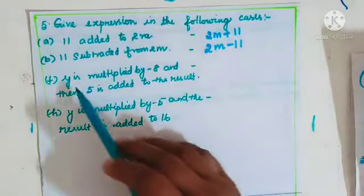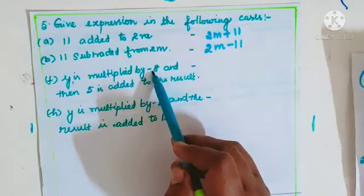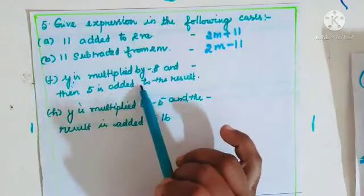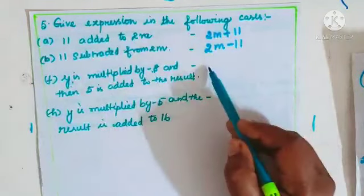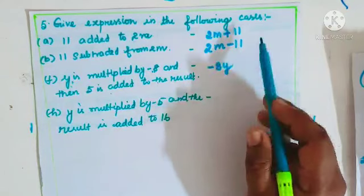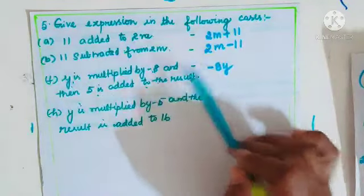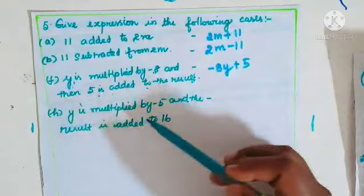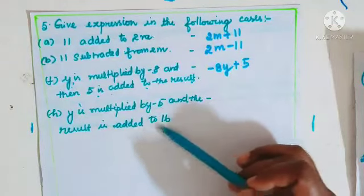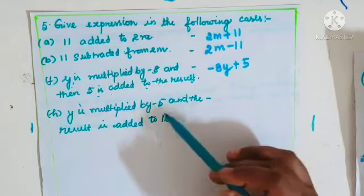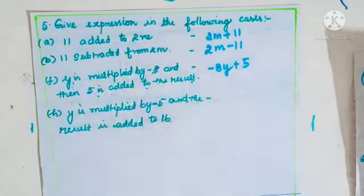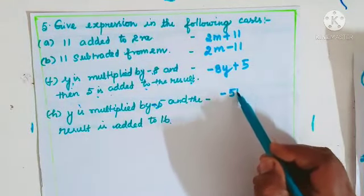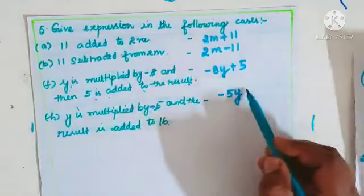'y is multiplied by minus 8, then 5 is added to the result' — first part: minus 8y, then plus 5, giving minus 8y + 5. 'y is multiplied by minus 5' — minus 5y. 'The result is added to 16' — so minus 5y + 16. Please write these in your book on page 234. You can complete the exercise within seconds.